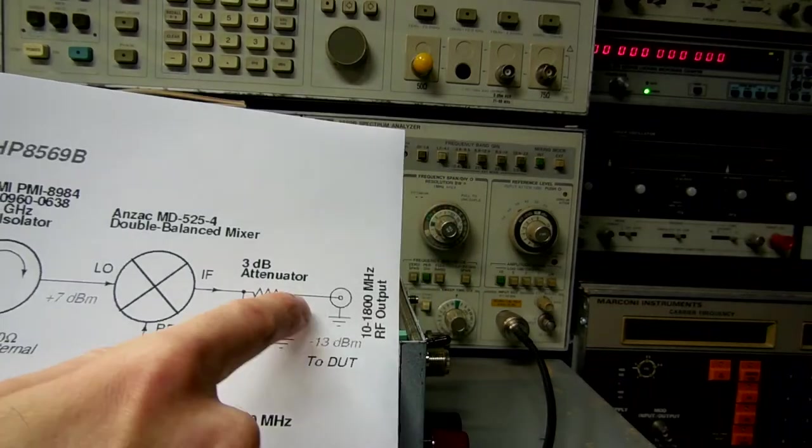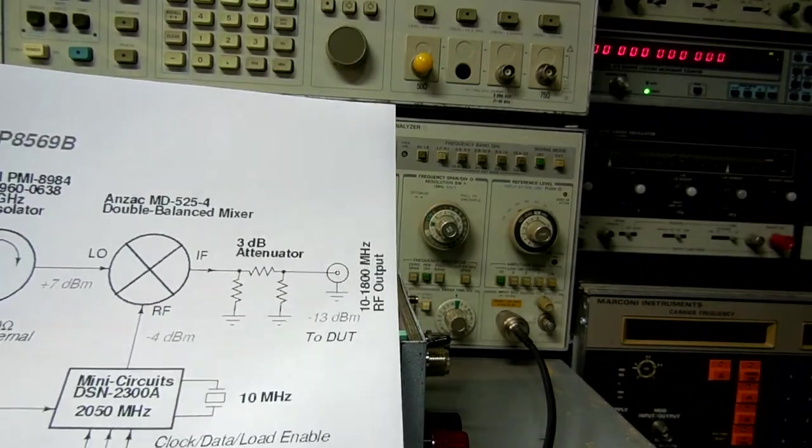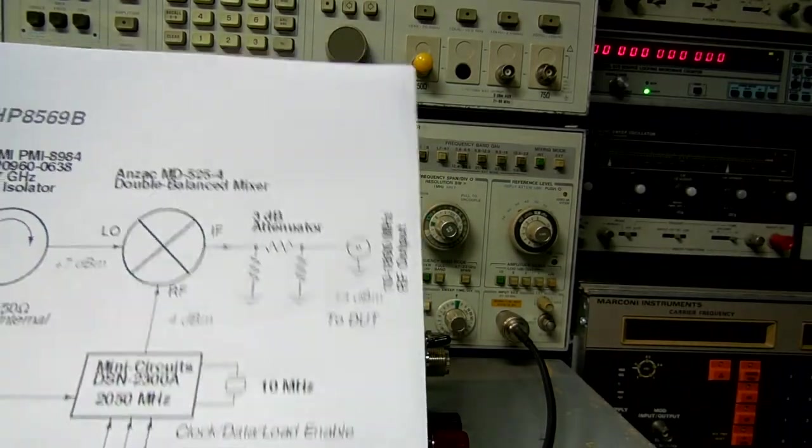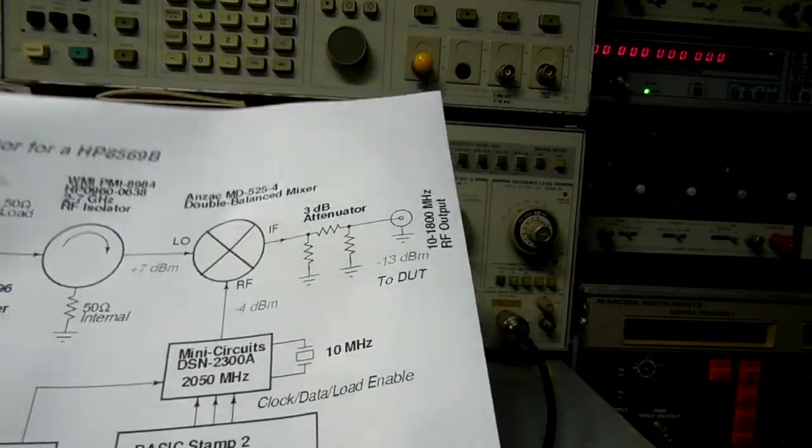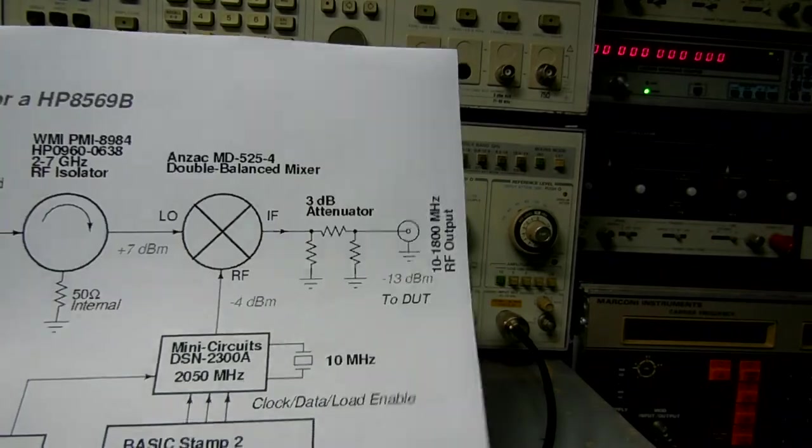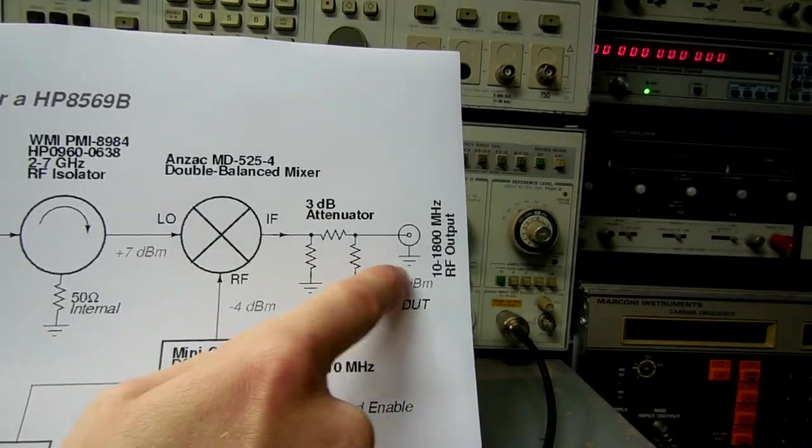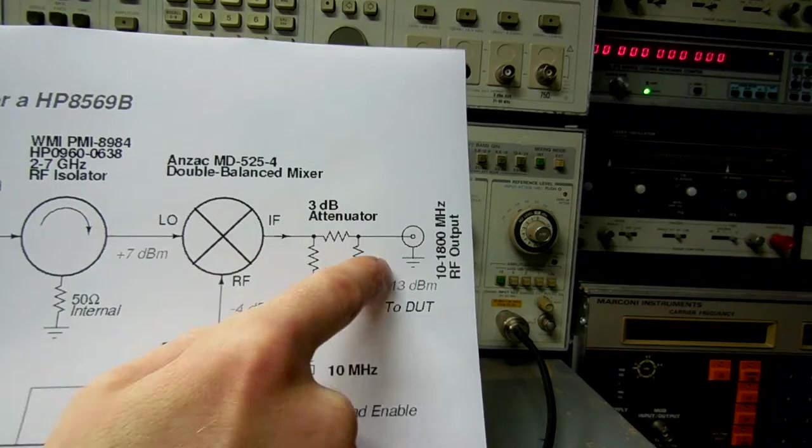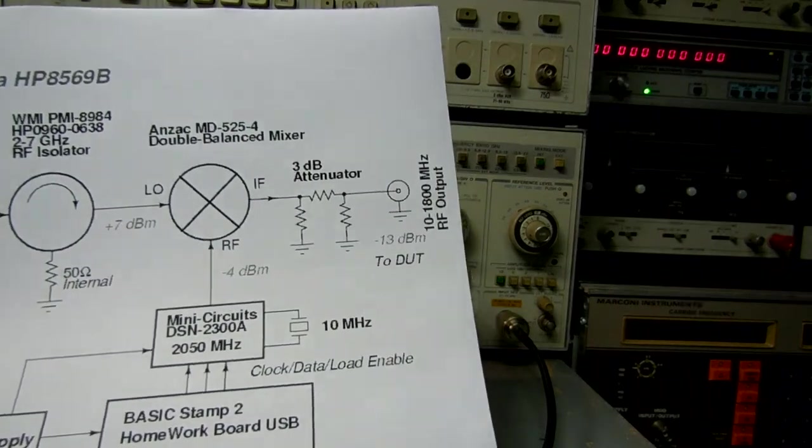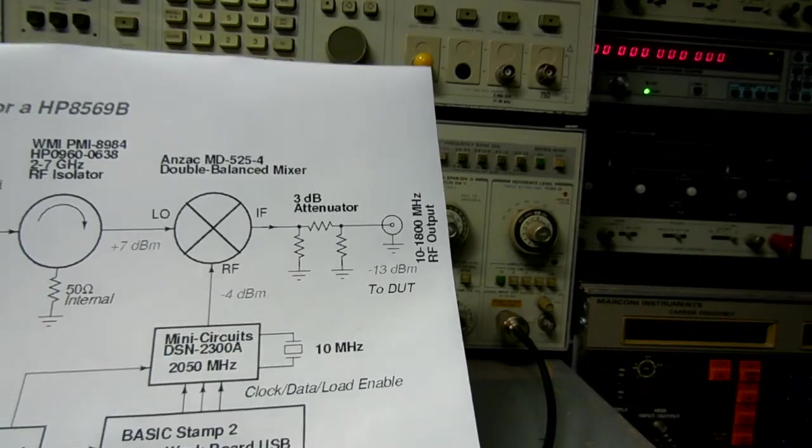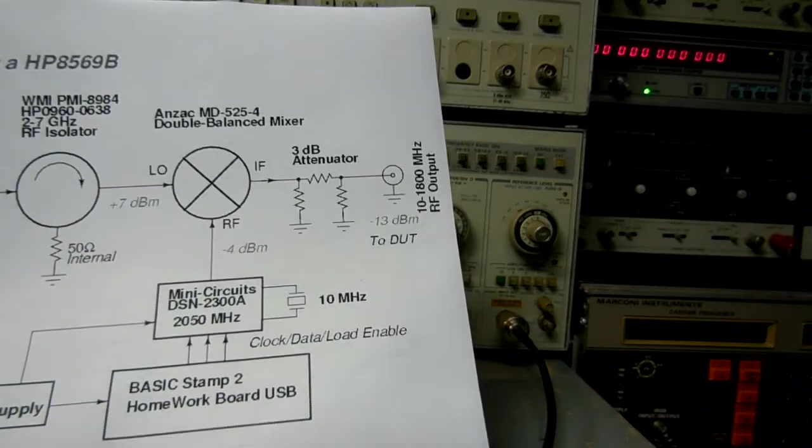So if you were to connect this output into a filter or something you'd be able to see the response of the filter. Ideally a real tracking generator should have an automatic level control on the IF output to maintain a flat output response. There's a trick we can do to bypass that and make the circuit a little more simple.